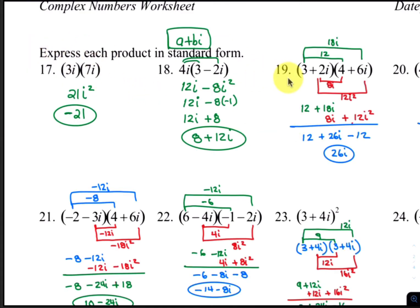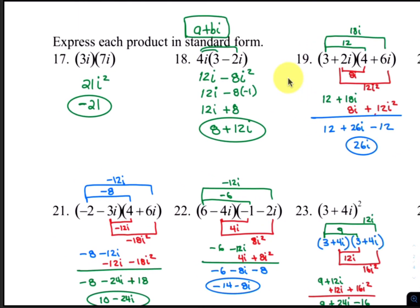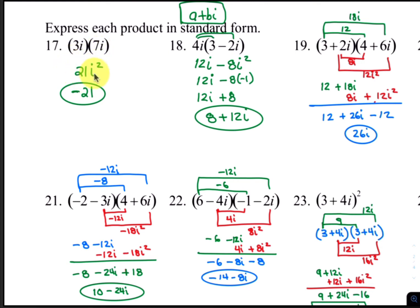For the next section, we are expressing each product in standard form. So 3i times 7i becomes 21i squared. Since i squared is negative 1, the final answer is just negative 21.